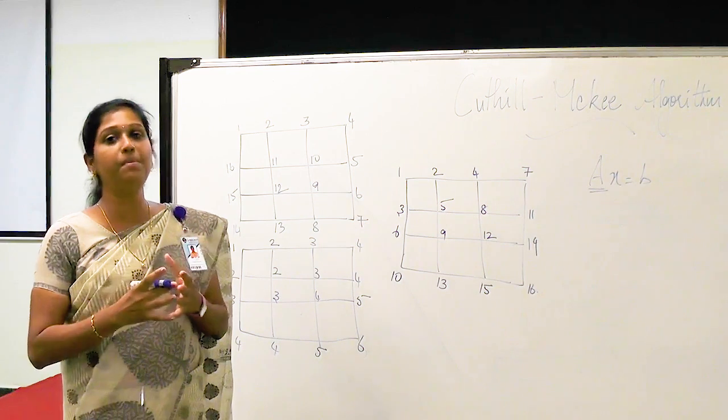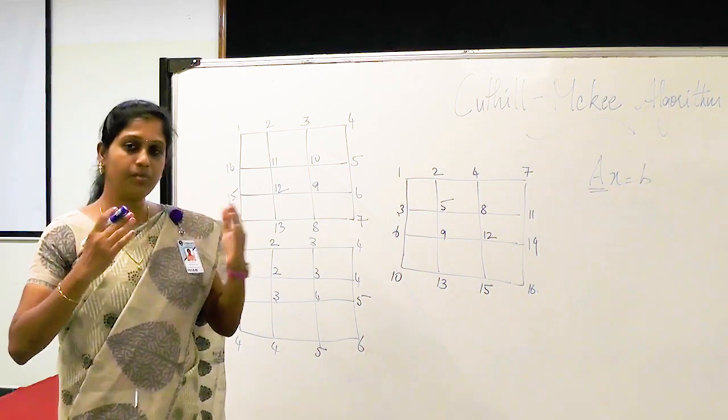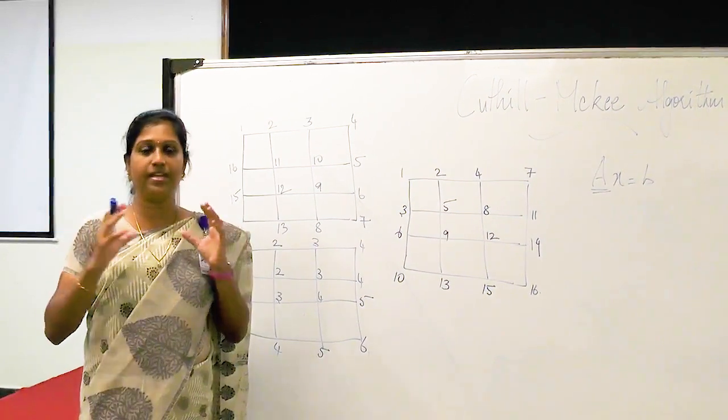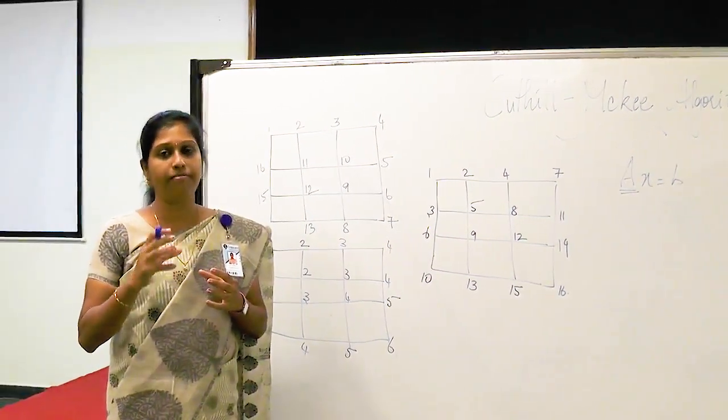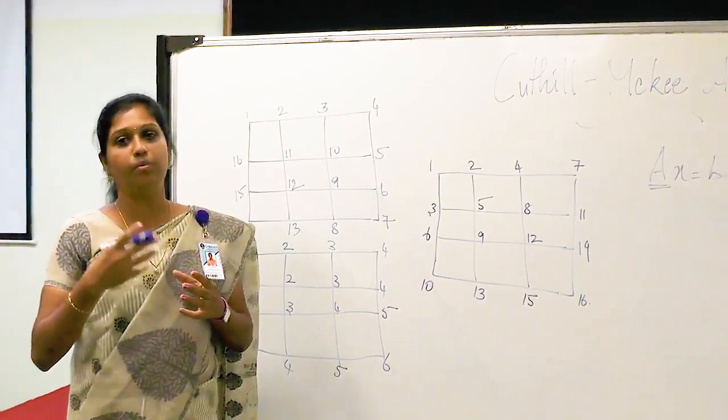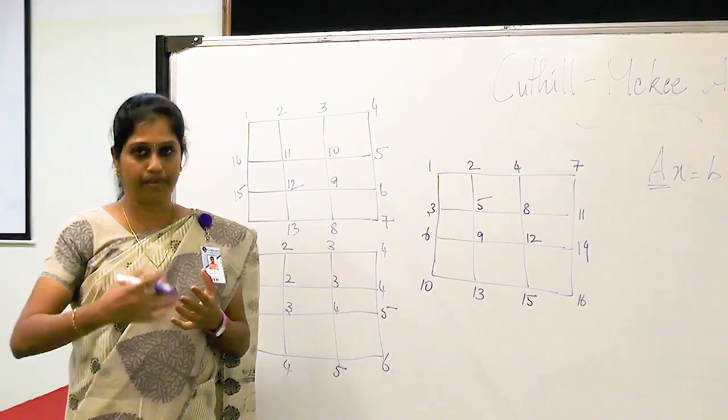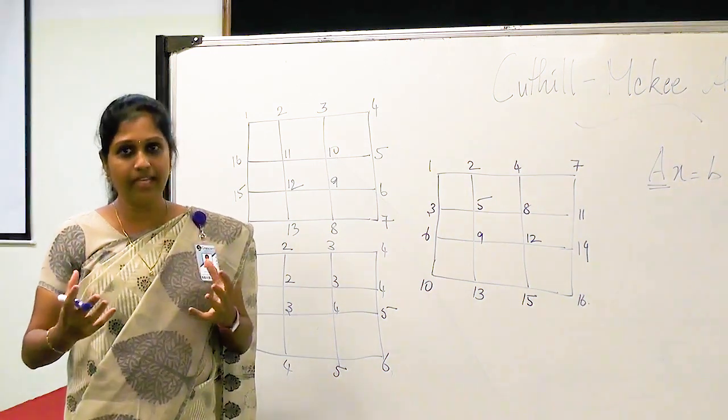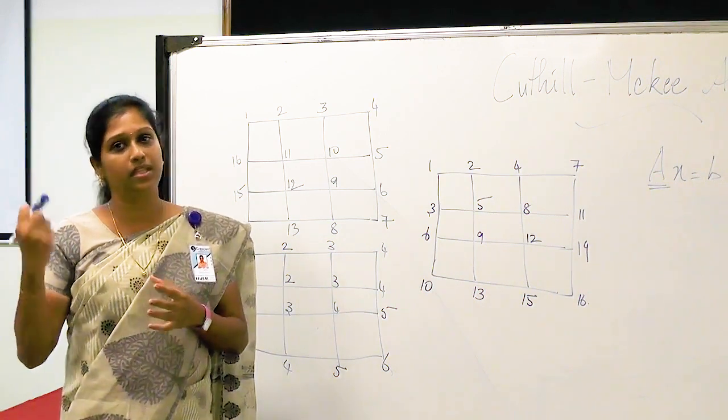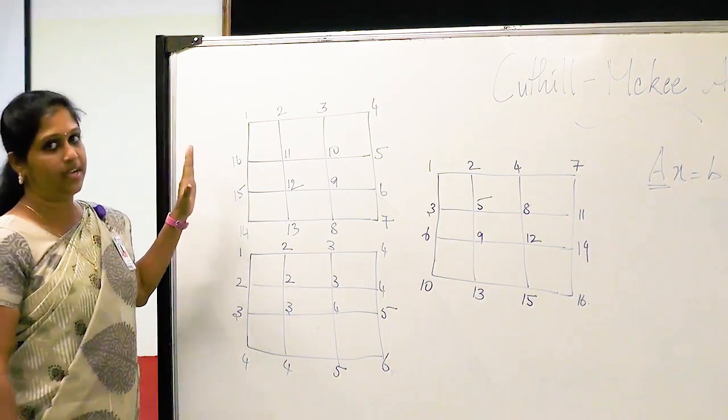First, we choose a minimum degree vertex. From that vertex, we construct level structure, so the vertices will be split into levels. Later then, according to the levels, we number them with the hierarchy of the degree, starting from the least degree to maximum degree. So how many number of least degree nodes are available in the graph? We have to perform this level structure again and again, and we have to take the minimum numbering graph which gives the minimum bandwidth. So for this particular graph, I am going to construct a level structure.